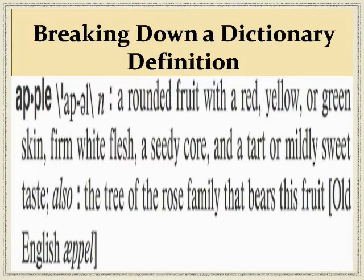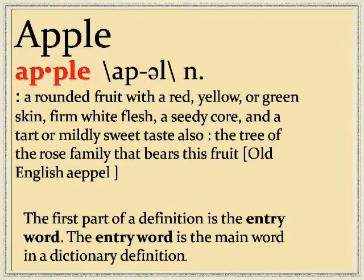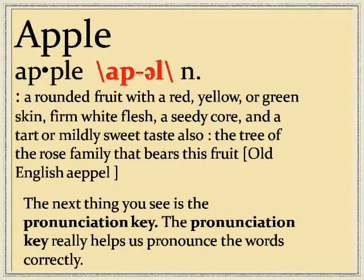Now let's break down a dictionary definition. Have you ever looked up the definition for a word in a dictionary? If so, then you might have been confused by some of the parts of that definition. Let's look at the word apple. The first part of a definition is the entry word. The entry word is the main word in a dictionary definition. You see apple is broken up into two syllables. The next thing that you see is the pronunciation key, which really helps us to pronounce words correctly.